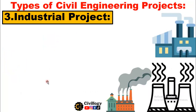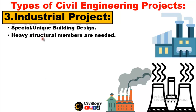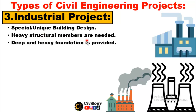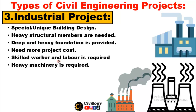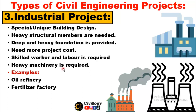The third type of civil engineering project is industrial project. These projects need special and unique building design. Heavy structural members, deep and heavy foundation, more project cost, skilled workers and labor, and heavy machinery are all required for industrial projects. Examples include oil refinery, fertilizer factory, steel mill, and powerhouses. That's all for today.